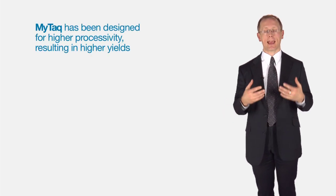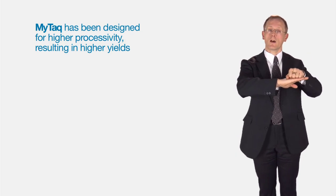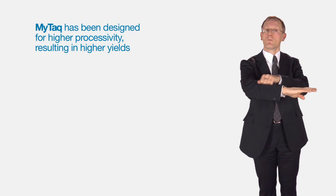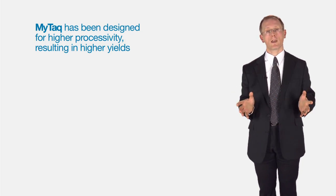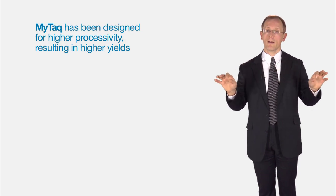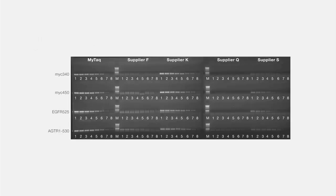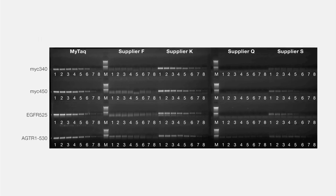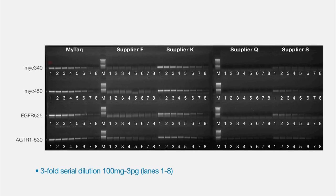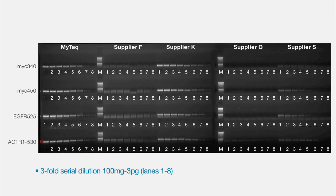MyTaq also has higher processivity. Processivity is how long the polymerase stays on the DNA. With MyTaq, the polymerase stays on the DNA for much, much longer. All polymerases have a tendency of falling off. If you can have a polymerase that stays on longer, it means you can use longer fragments and you increase sensitivity. Whether you've got high or low concentration, you're still getting very good results.